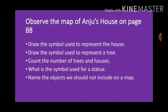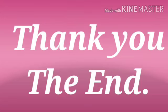Observe the map of Anju's house on page number 88. Draw the symbol used to represent a house. Second, draw the symbol used to represent a tree. Third, count the number of trees and houses. Fourth, what is the symbol used for a statue? Last, name the objects we should not include on a map. Okay students, I hope you all understood. Take care. Bye-bye. Thank you, students.